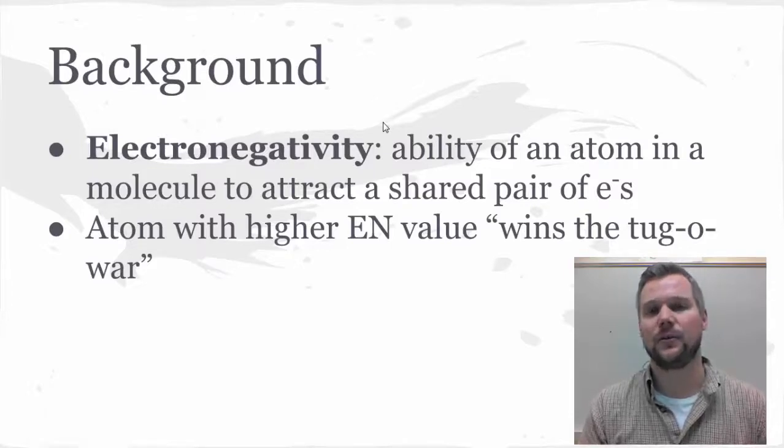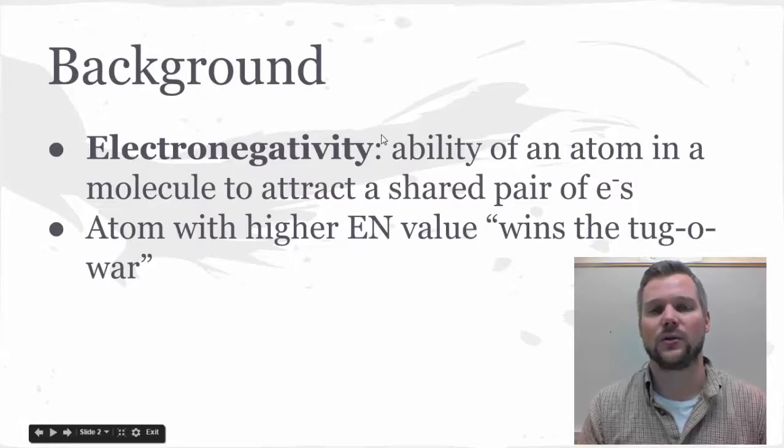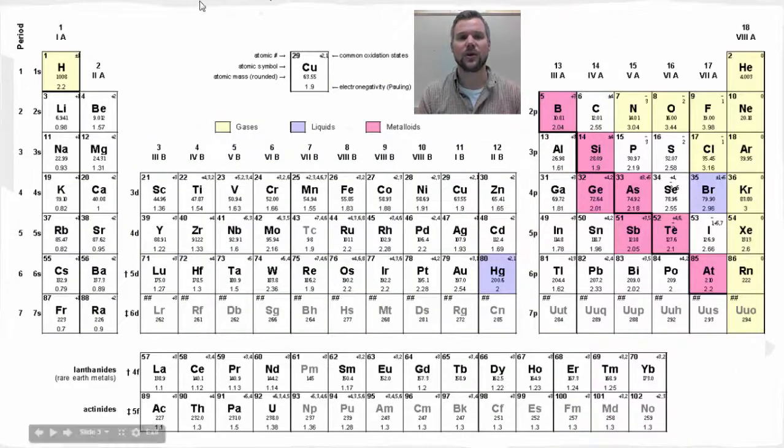And the value that happens to be larger is the one that's going to win the tug of war. So high values mean that they really like electrons. You're going to have a resource that looks like this. And for our resource, the electronegativity is in the bottom of the periodic table square. You can see that up here. There's a key to tell you that.